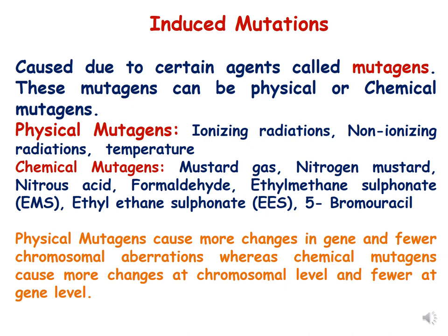Physical mutagens cause more changes at the gene level and fewer at the chromosomal level, so more genic or point mutations happen because of physical mutagens. Chemical mutagens cause more changes at the chromosomal level, causing more syndromes, and they cause fewer mutations at the gene level.